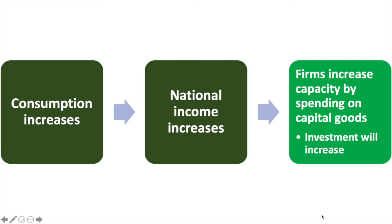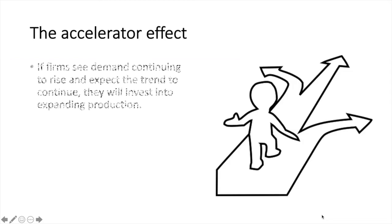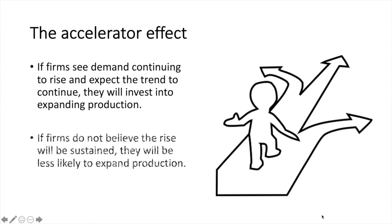Remember, we assume firms will make decisions to maximize profit. If they do not anticipate this surge in demand to persist, it is less likely that they will invest in expansion. If firms see demand continuing to rise and expect the trend to continue, they will invest in expanding production. If firms do not believe the rise will be sustained, they will be less likely to expand production, if they do so at all.